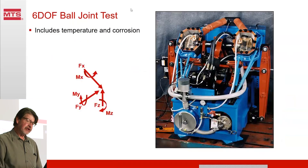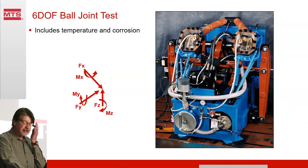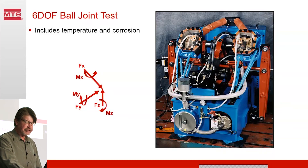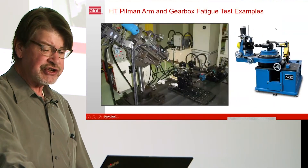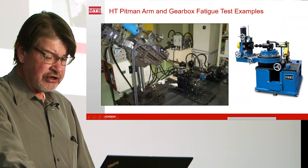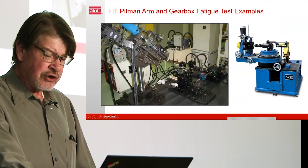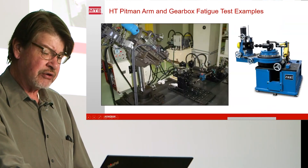This is a six degree of freedom ball joint test that includes complete environmental simulation — hot and cold and slurries can be used. With all six degrees of motion and load, we get a complete simulation of all the forces and dynamic loads that go into the ball joint system. This system tests two ball joints at a time and they achieve the same program. Here's an example of a test of a pitman arm — very common to have these gearboxes push to a pitman arm. We simulate the load from the arm and the rotation from the steering wheel to test the gearbox.